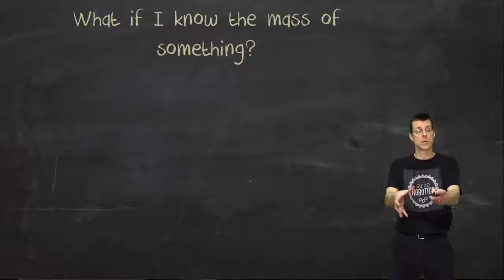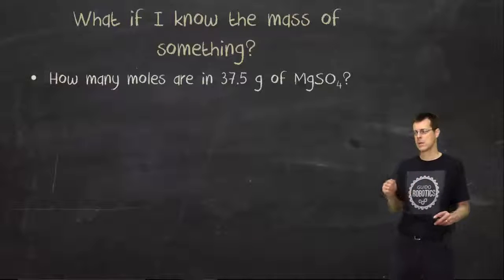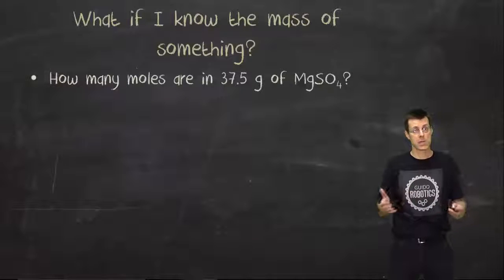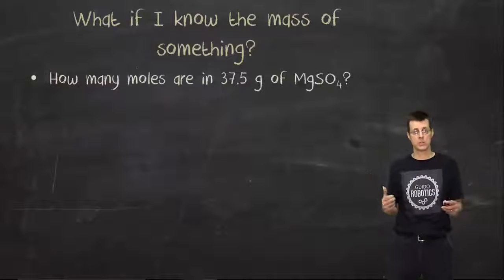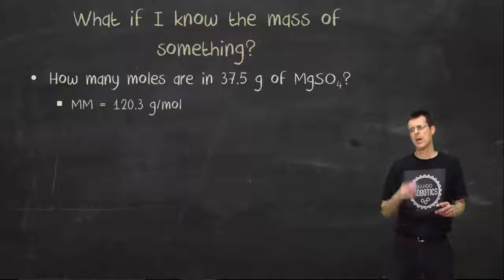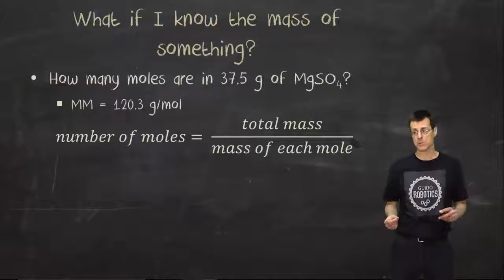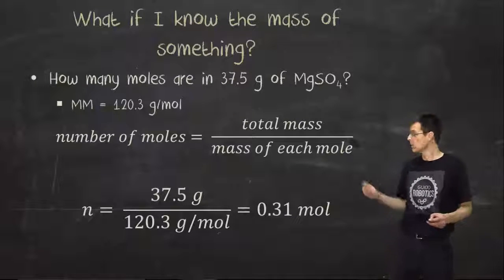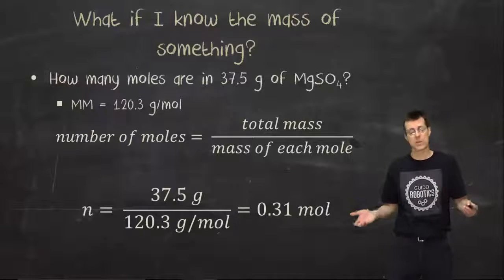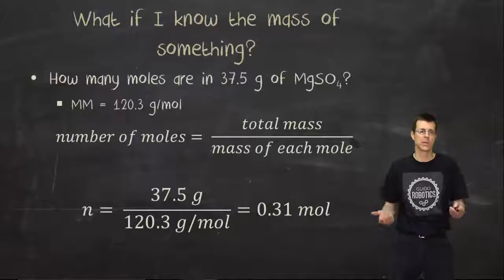Sometimes I know the mass. Sometimes I put it on the balance and I figure out how heavy it is. If I know what it is, I can calculate numbers of moles. So if I have 37.5 grams of MgSO₄, I already know its molar mass. I then divide the total mass by the mass of each mole. In other words, the total mass divided by the molar mass. So in this case, 37.5 grams divided by 120.3, and I get 0.31 moles.